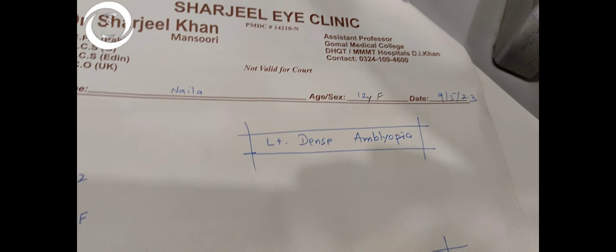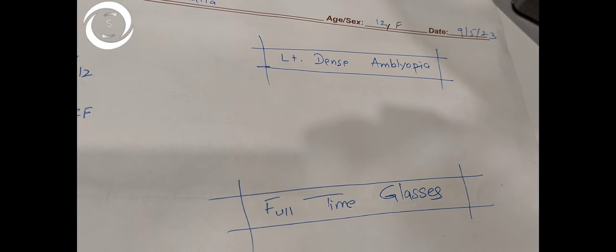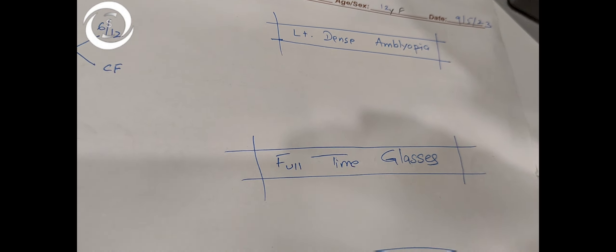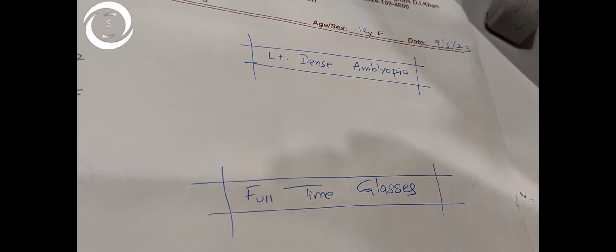This female, 12 years of age, presented first on 9th May this year. When I examined her, she had dense amblyopia and counting finger vision in the left eye.